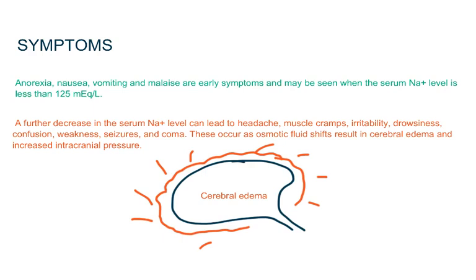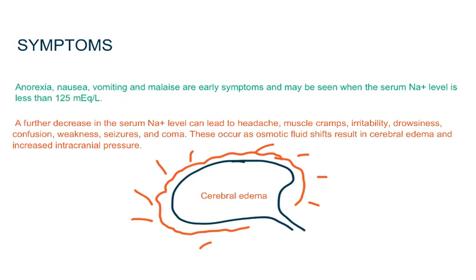Signs and symptoms of acute hyponatremia do not precisely correlate with the severity of hyponatremia. Some patients with profound hyponatremia may be relatively asymptomatic. Anorexia, nausea, vomiting, and malaise are early symptoms and may be seen when the serum sodium level is less than 125 mEq per litre.